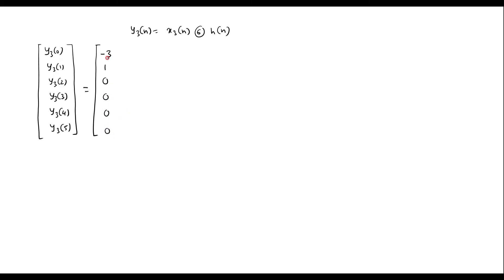Writing x3 of n in reverse order for the first row of the circulant matrix: 0, 0, 0, 0, 1, minus 3. The remaining entries are filled in diagonally following the circulant pattern.